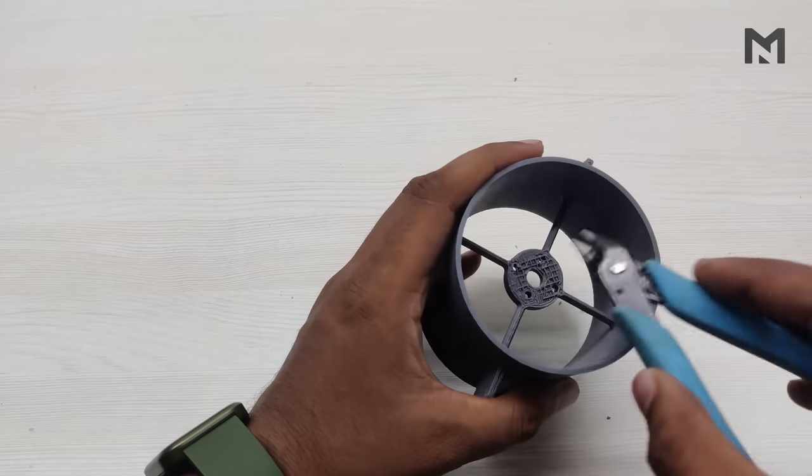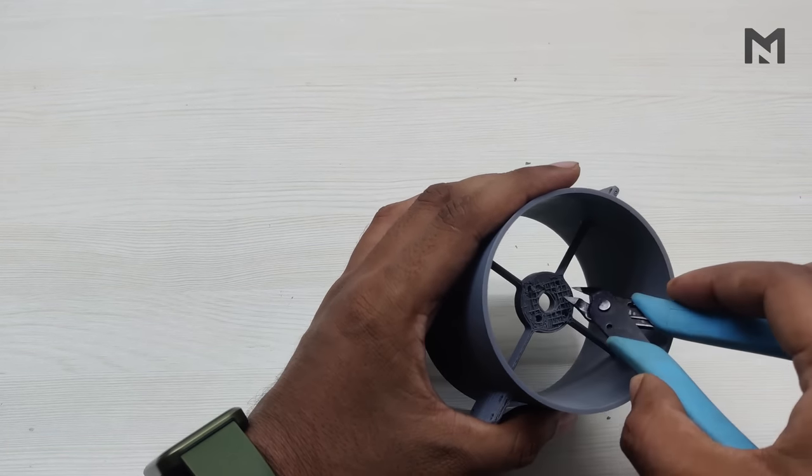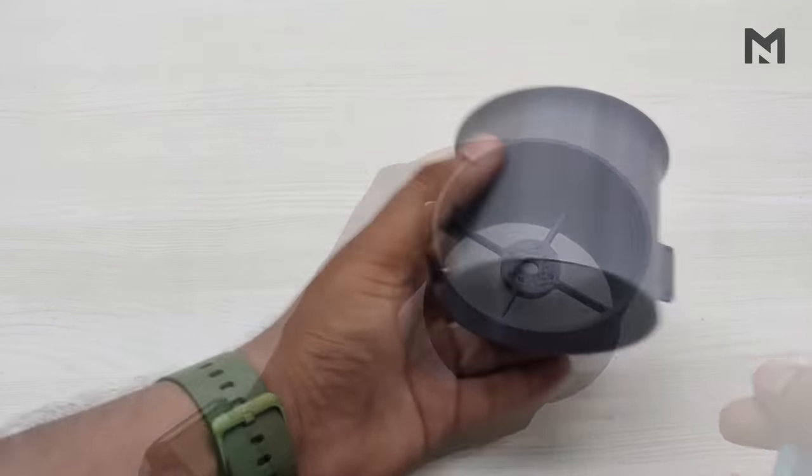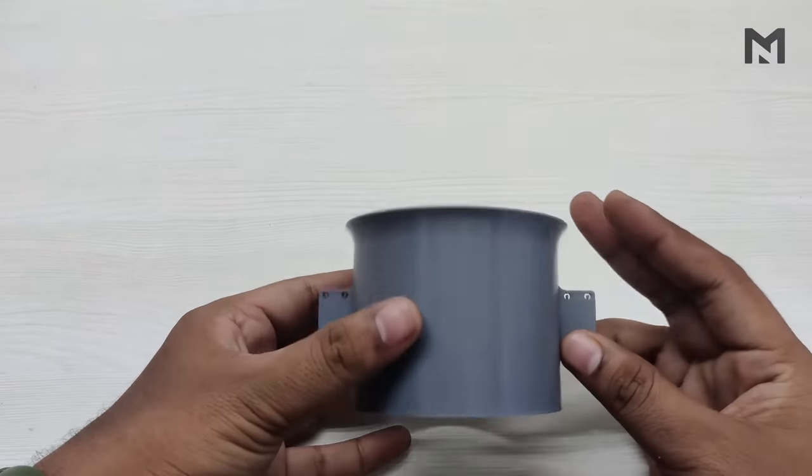Use a wire cutter to cut the extra support. Once all the support material is out, you'll find some sticking to the flat surfaces, so use a wire cutter and remove all of them. After removing all the support materials, the casing will be ready.